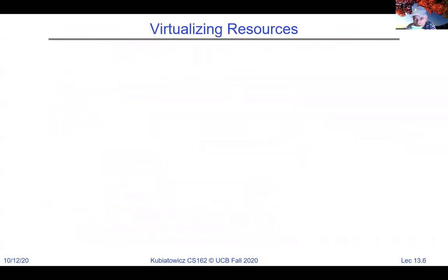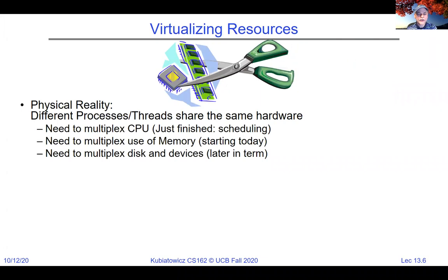We're going to move on. We've been talking a lot about virtualizing the CPU, and it's time to move on to other resources. Different processes or threads share the same hardware. You need to multiplex a CPU — that was scheduling — you need to multiplex memory, which we start today, and multiplex disk and devices later. We'll also talk about virtual machines. Today we focus on memory.